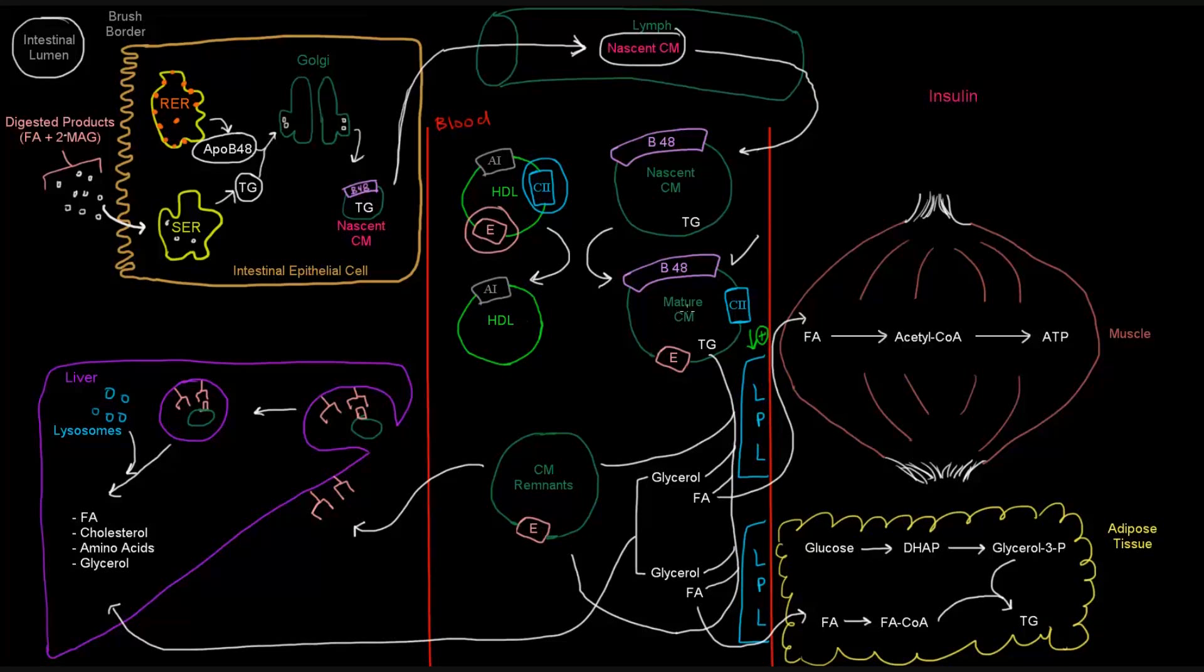Now, this mature chylomicron has a bunch of triglycerides in the blood. It will arrive to this enzyme called LPL, otherwise known as lipoprotein lipase. Lipoprotein lipase takes the triglycerides that are in the chylomicron. It takes those triglycerides, and the triglycerides here in the chylomicron are going to come across and get cleaved by the LPL into glycerol and fatty acids.